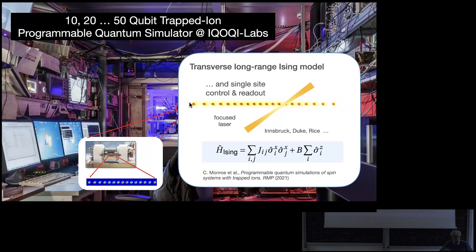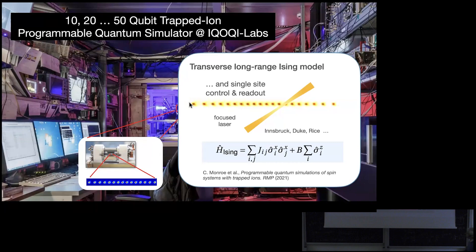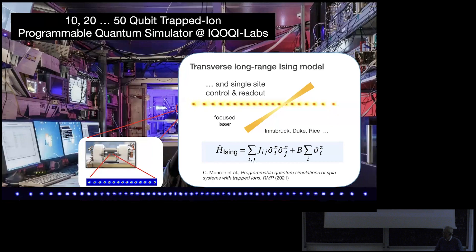The important feature is the long-range interaction: it falls off as 1/r^alpha, where alpha is typically around 1.2 — tunable in principle. The system has grown: last year it was 51 ions, earlier versions had only 20 or 10. There is also now a 2D trapped-ion system in Innsbruck, which is more complicated and more interesting, and all these techniques should be transferable to that 2D situation.